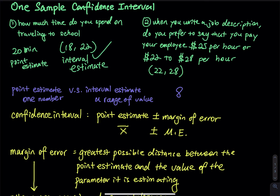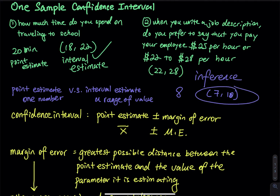Interval estimate is more flexible. You can say on average I spent around eight to ten hours to study for the final. Overall, when you do confidence interval, you are doing inference. Inference means you are trying to use an interval to guess a number. The point estimate is also called inference, but it is not a recommended method because you are using one number to estimate another number.